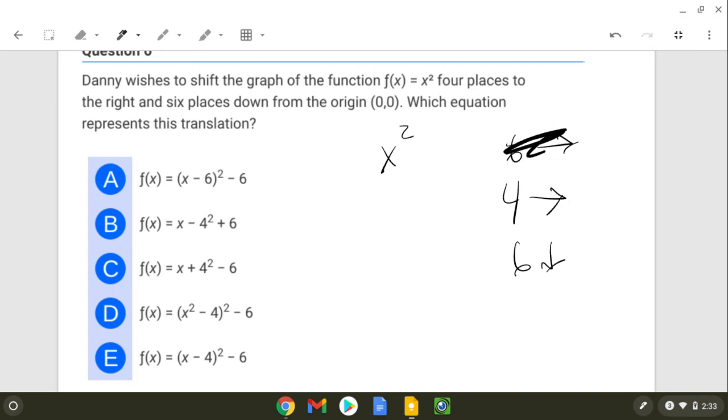All right, so you may not remember our rules from Algebra 2 about this, but if you want to move something to the right, you're going to have to subtract on the inside. So this is like h to the right. So in parentheses, you're going to minus something to move it to the right.